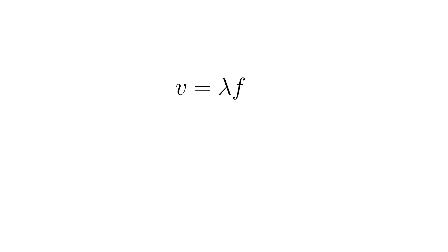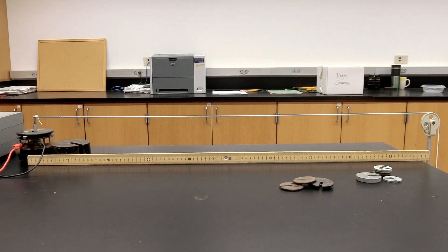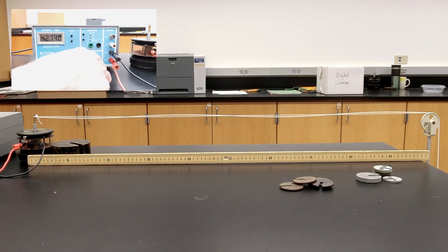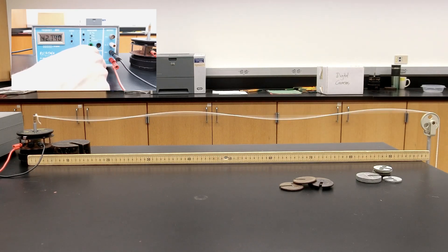The wave speed on our string isn't affected by changing the wavelength or frequency, but instead depends on the properties of the medium — in this case the tension and the mass per unit length of the string. We can see this by finding different resonant modes of our string while keeping the length and applied mass constant, and seeing that the wavelength times the frequency gives the same result.